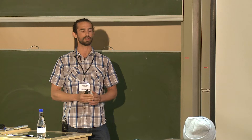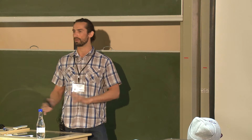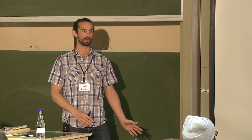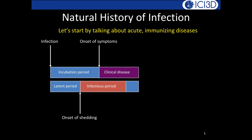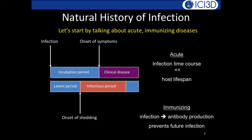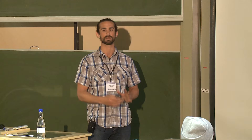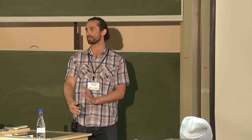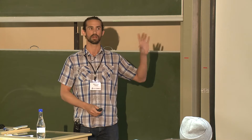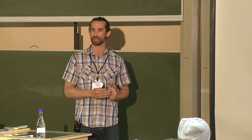Acute means the timescale of the disease is very short relative to the host's lifespan. Humans live about 60–70 years; influenza lasts two weeks — so it's acute. Immunizing infections stimulate immunity through antibody production that lasts a long time, meaning you get the infection once and are immune for the rest of your life. We're starting with these diseases because the modeling is simpler.